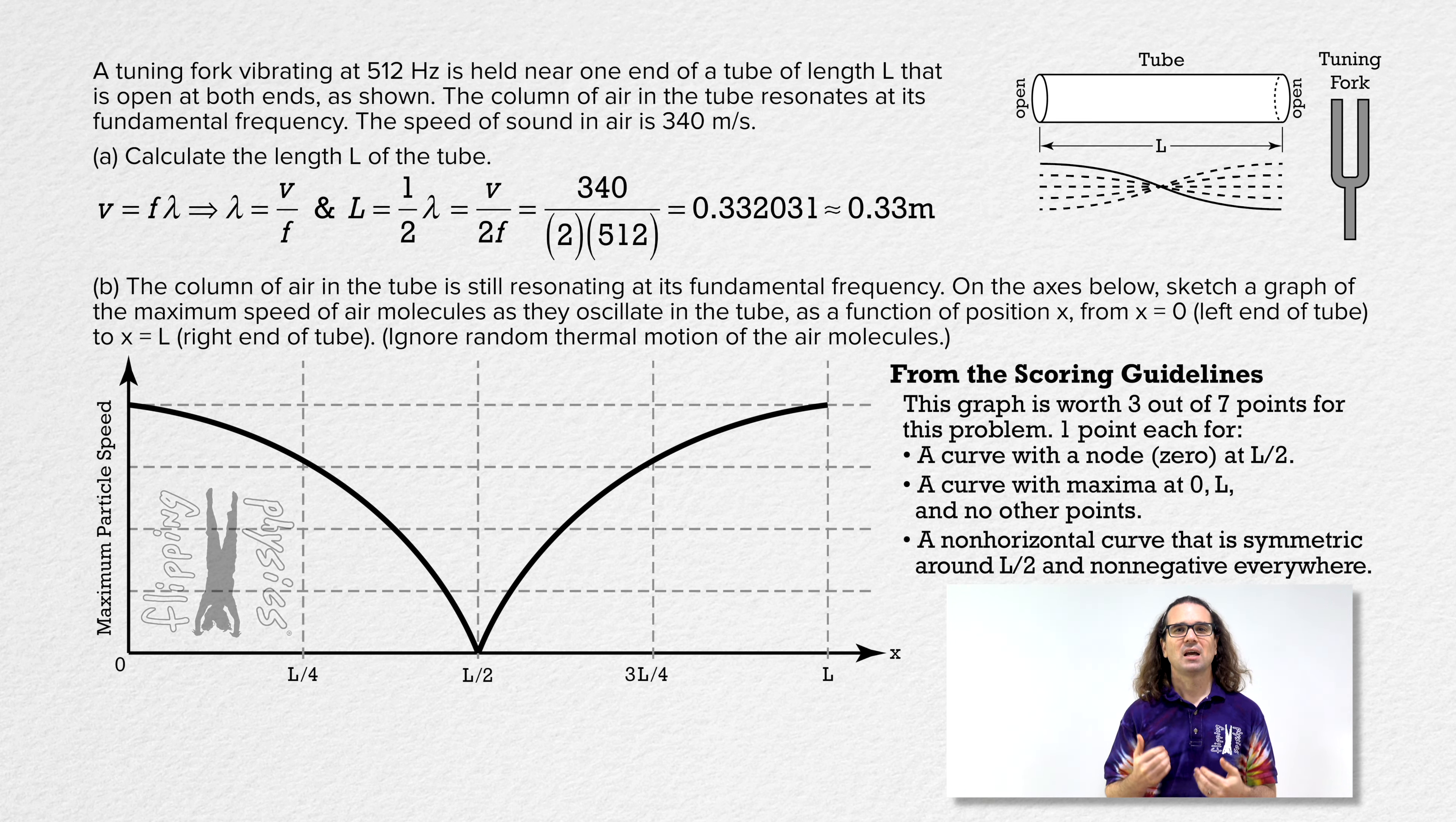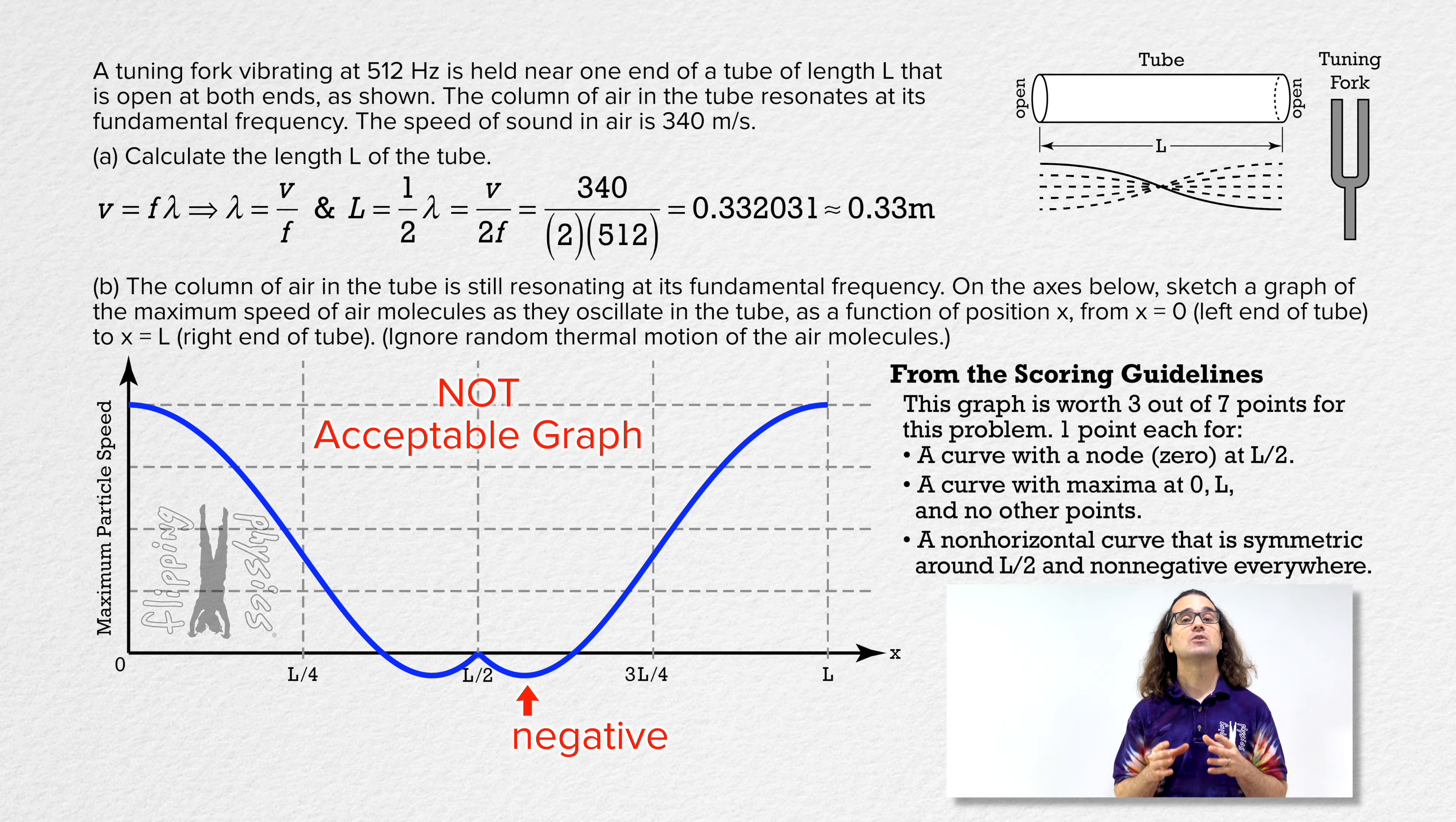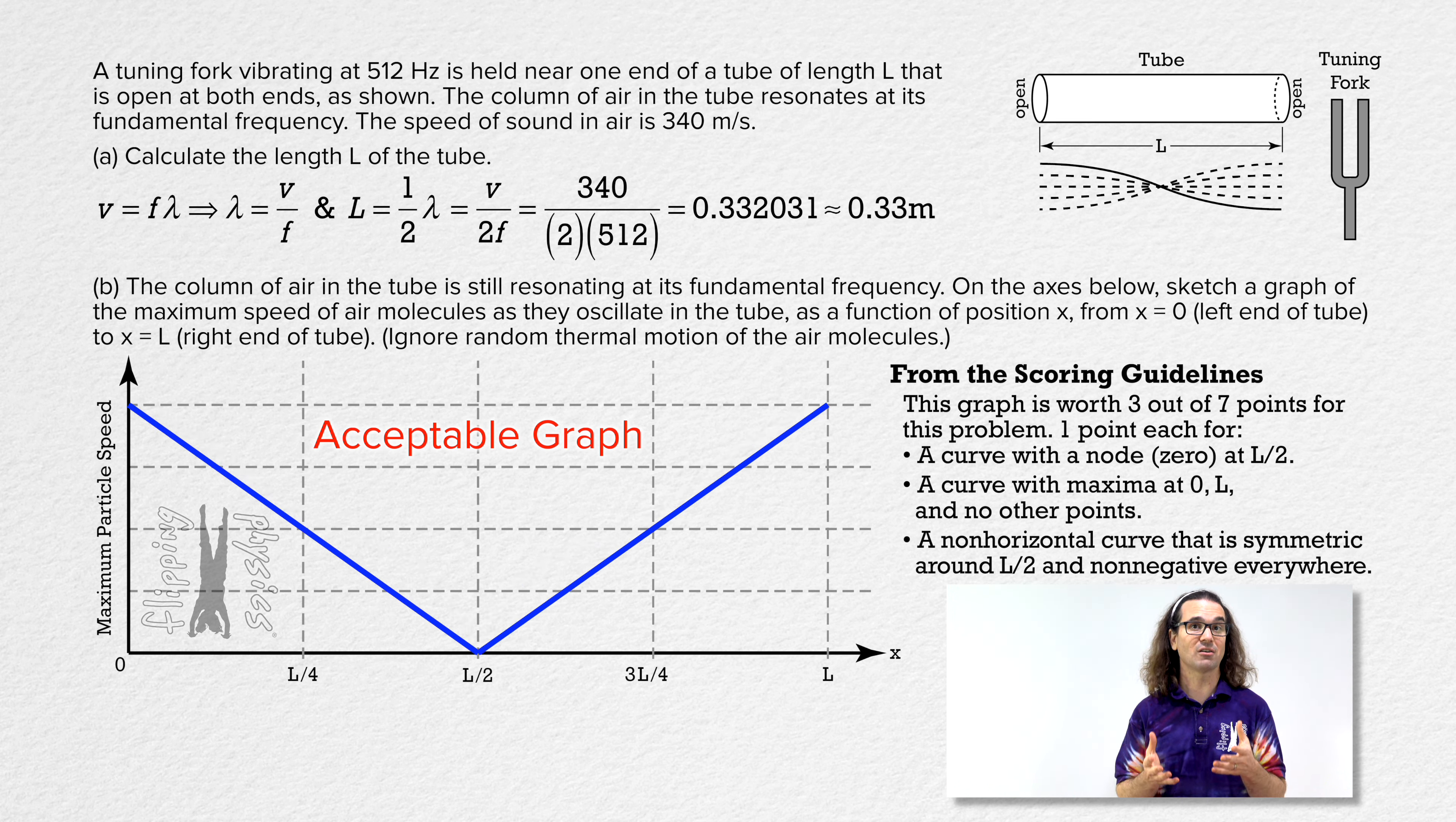To clarify what this means, as long as your curve has a y value of 0 only at L over 2, shows maximum values only at 0 and L, is never negative, is not horizontal, and is vertically symmetric about x equals L over 2, you get full points. In other words, the exact shape of the curve you draw is not graded and they do not expect you to know exactly what the shape of the curve should be. So please, do not freak out if you do not fully understand how to draw a graph. Sometimes you will only know specific locations and have to interpolate between those known locations like we did here in part b.